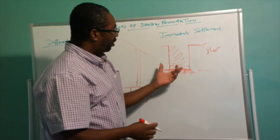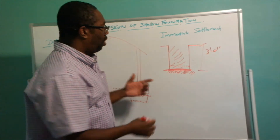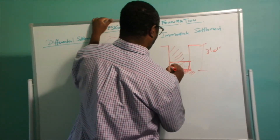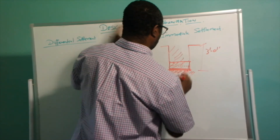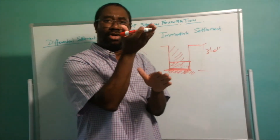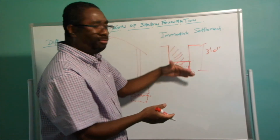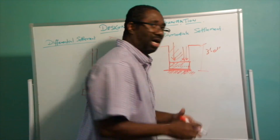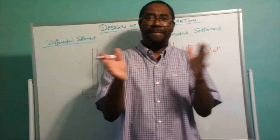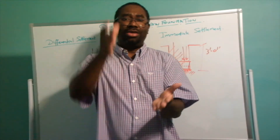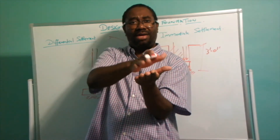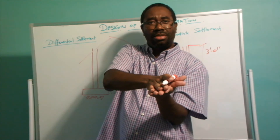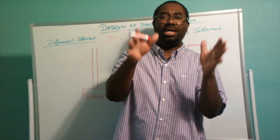Since the soil is going to move up, when you pour your footing, that soil which moved up is going to eventually move back down under the weight of the footing. That is what we call immediate settlement — when you place the weight of the footing on that soil, the soil is going to move down and settle at a certain level.